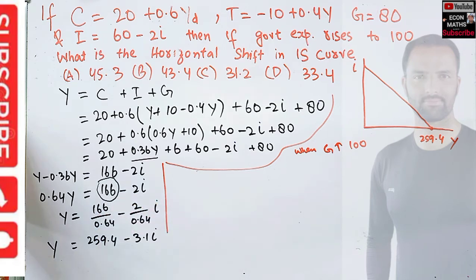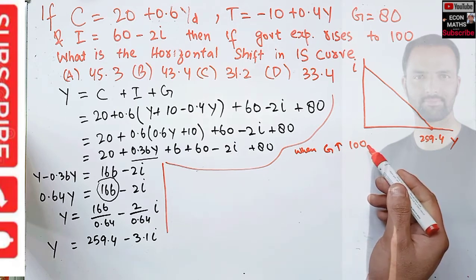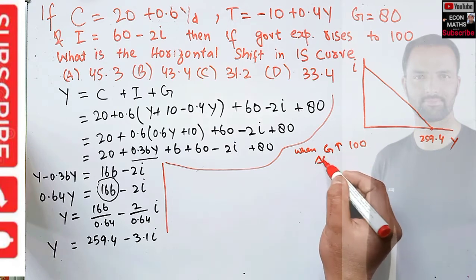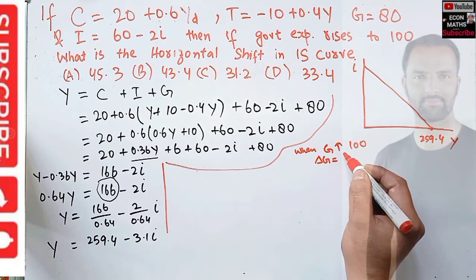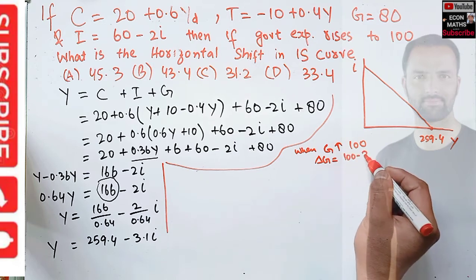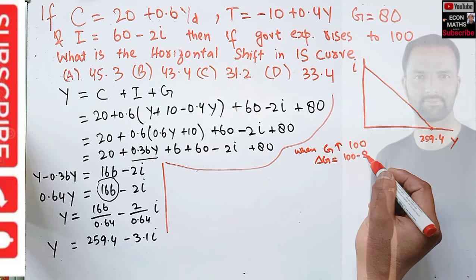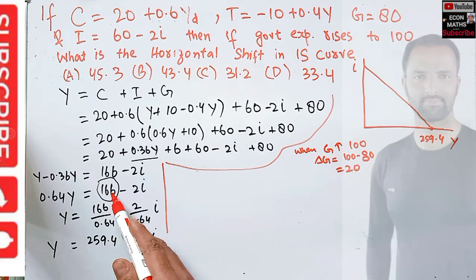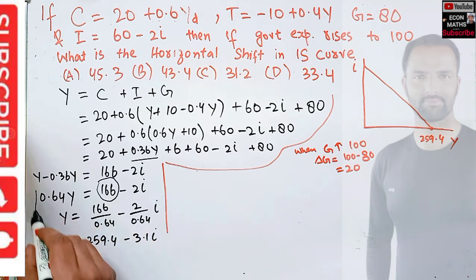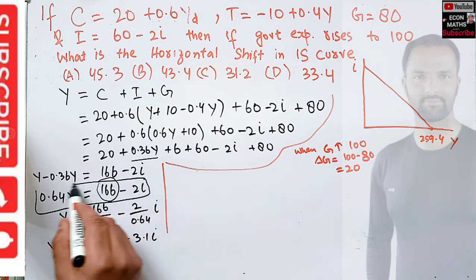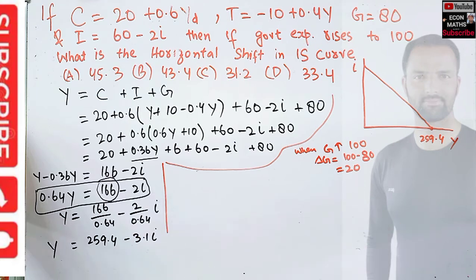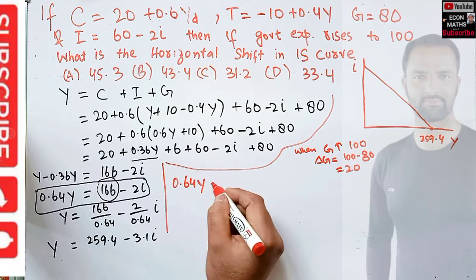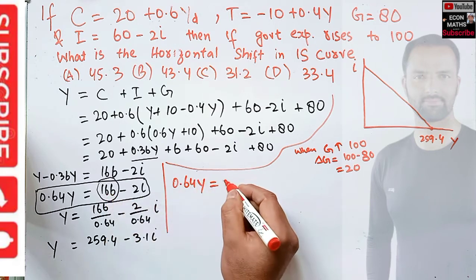Now we need to find out when G increases to 100 what will happen. Since we have autonomous government expenditure, if G increases, the intercept will change. Change in G = 100 - 80 = 20.